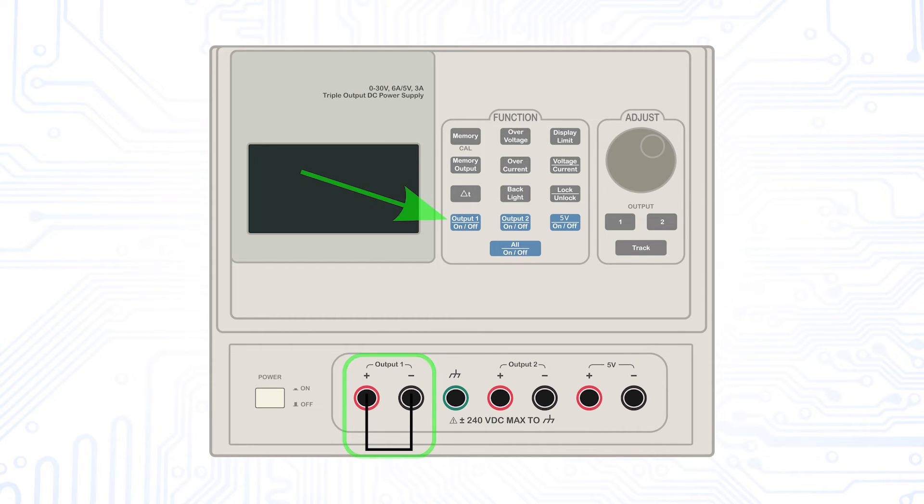Once this short circuit has been generated, you can activate the output and set the desired current limit directly via the current setting. In our case, you would have to switch to the current setting with the voltage-current button and then set the desired current level.